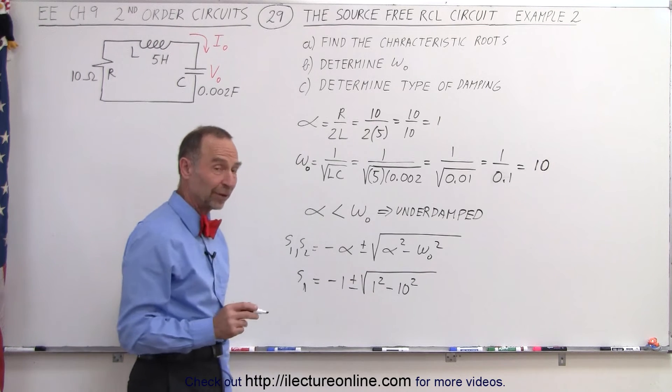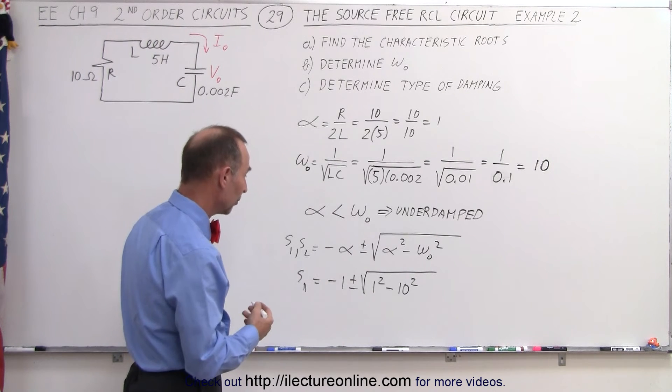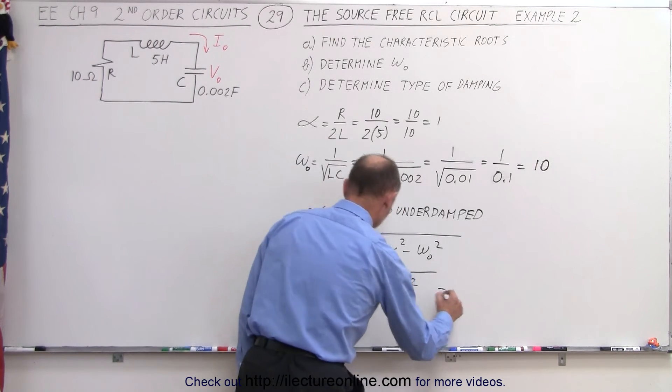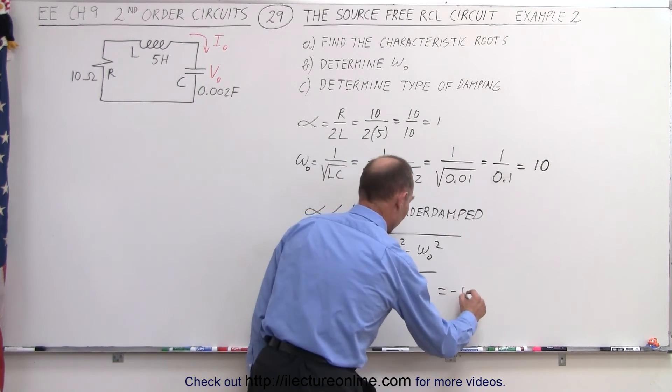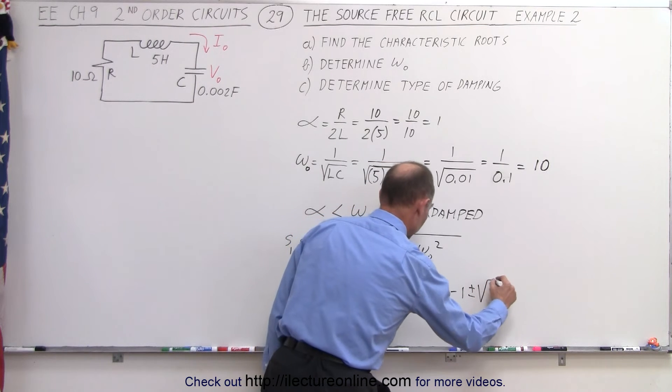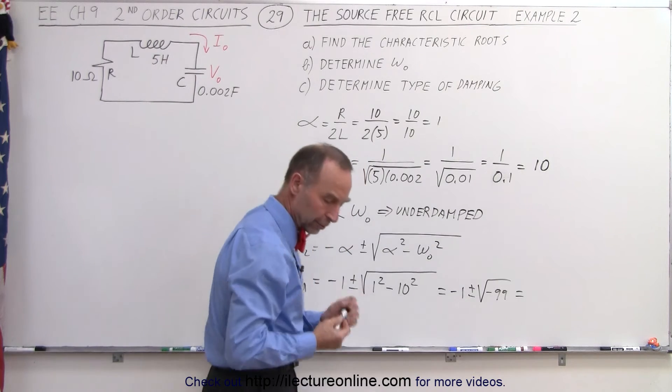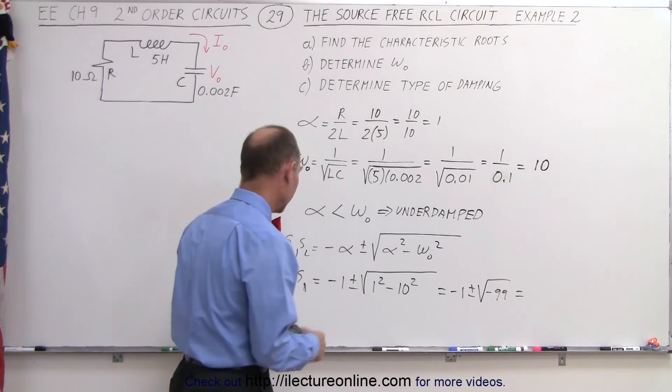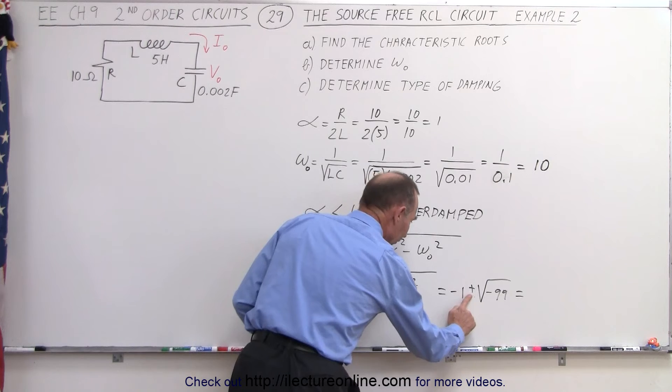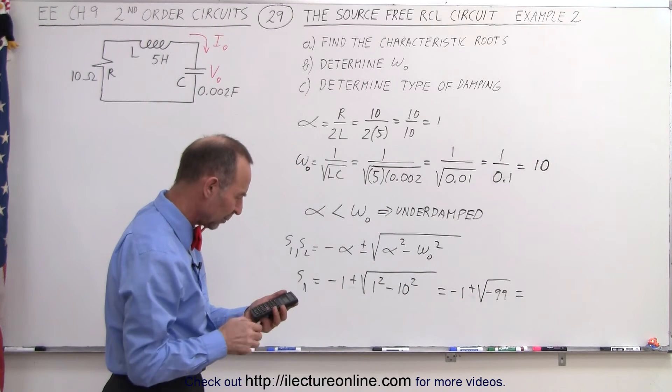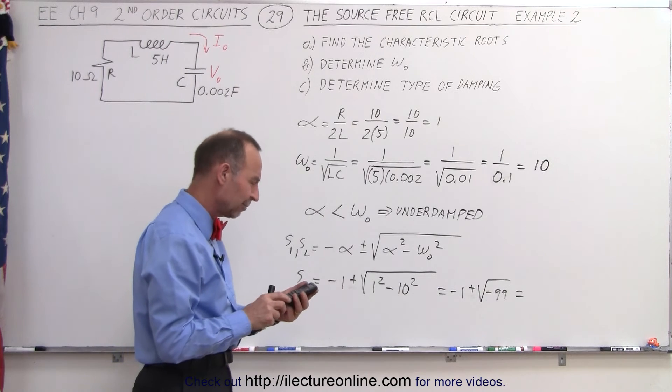And there you can right away see it, we're going to end up with a negative number underneath the radical, so it's going to be a complex number. So this is equal to negative 1 plus or minus the square root of minus 99. And again, since we're looking just for one of them, we don't need the negative option, we only want the positive option, so take the square root of 99, which is 9.94...